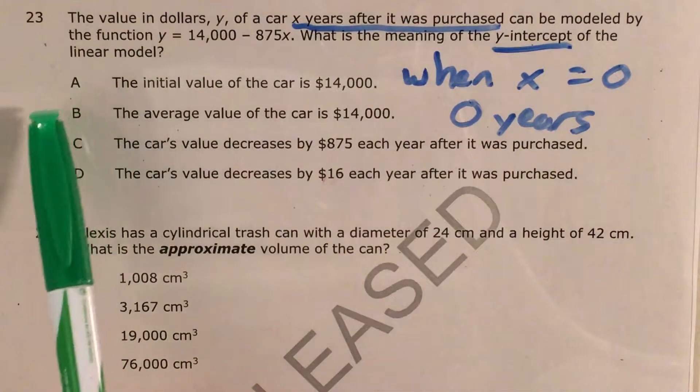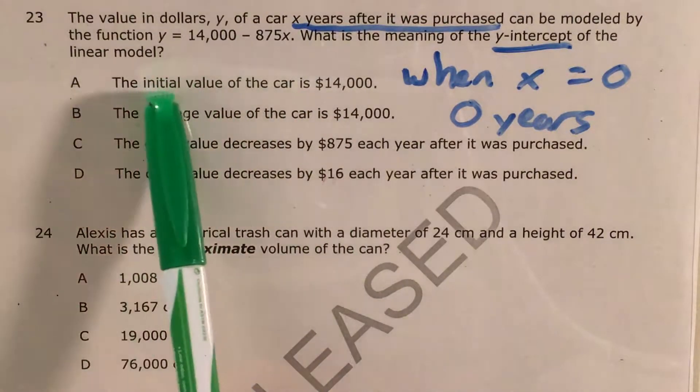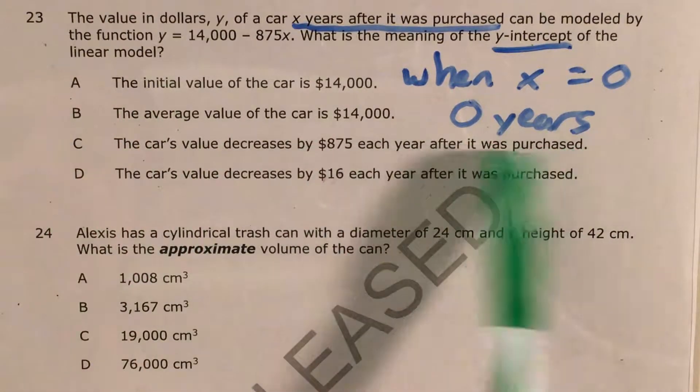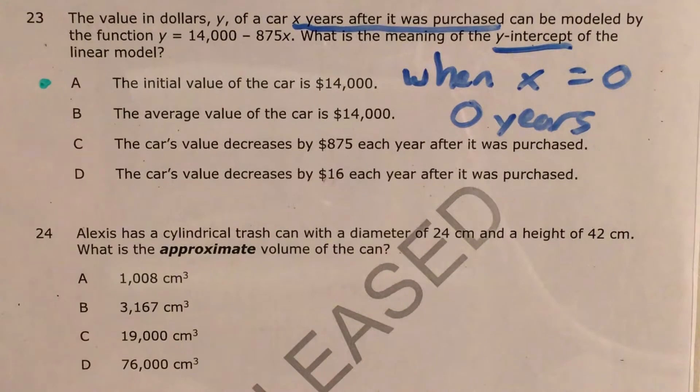Let's see. Choice A, the initial value of the car is $14,000. Initial, well, initial is like at the beginning, and beginning pretty much means zero years. So I'm going to put a dot by that until I can knock out some other answer choices.